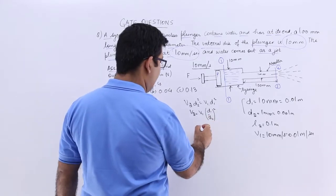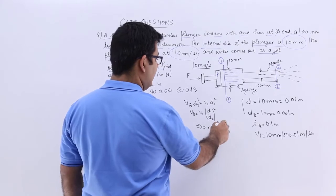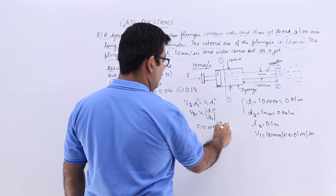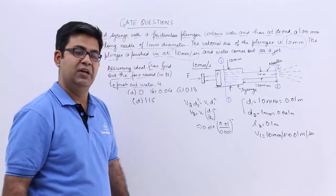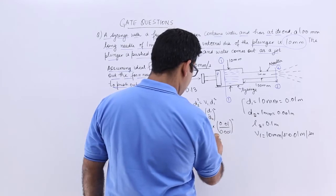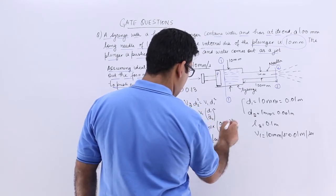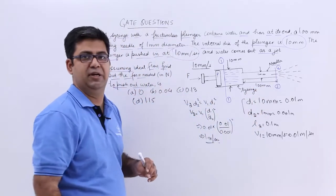So put in the value. So you will get 0.01 into D1 is 0.01 and D2 is 0.001 and you square it. This value will come out to be 1 meter per second. So your velocity at section 2 is 1 meter per second.